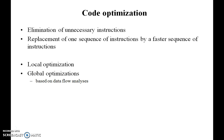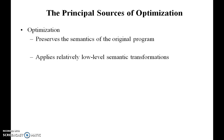There are two types of Code Optimization: Local Optimization and Global Optimization. The main principal sources of optimization inside the compiler — the main purpose is to reduce the complexity of the program and improve the efficiency of the compiler through effective optimizations.